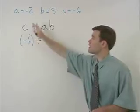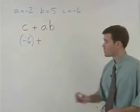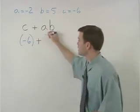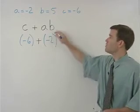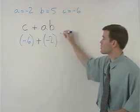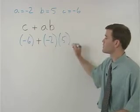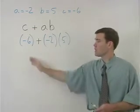We have plus A, which is negative 2. So we're going to replace this A with a negative 2 in parentheses. B is 5, so we replace the B with a 5 in parentheses.